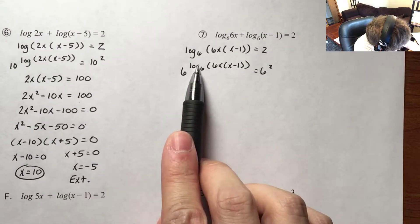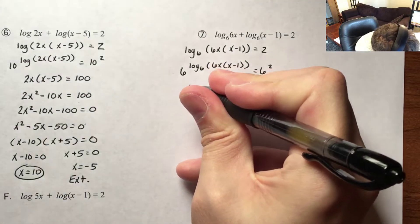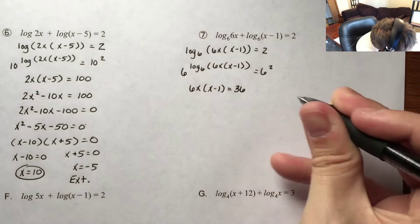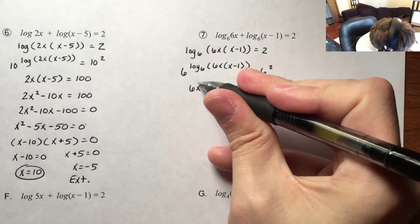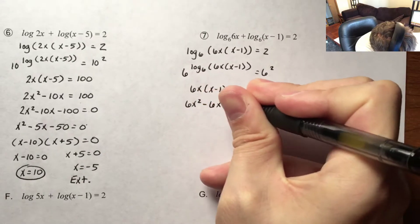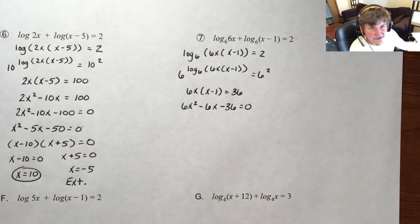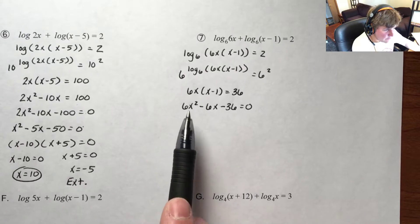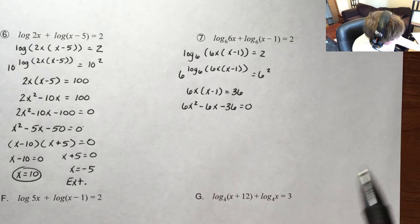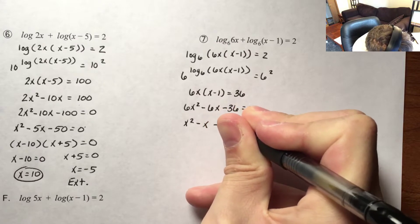These are inverses of each other, so they cancel. Now I have 6x times x minus 1 equals 36, since 6 squared is 36. Then I distribute 6x through to get 6x squared minus 6x minus 36 equals 0 — I went ahead and subtracted 36 since I knew I'd need to. Factoring tells me I need to divide out a 6, giving me x squared minus x minus 6 equals 0.